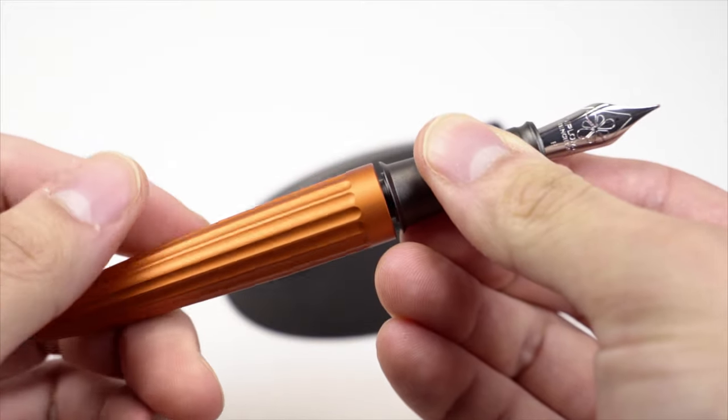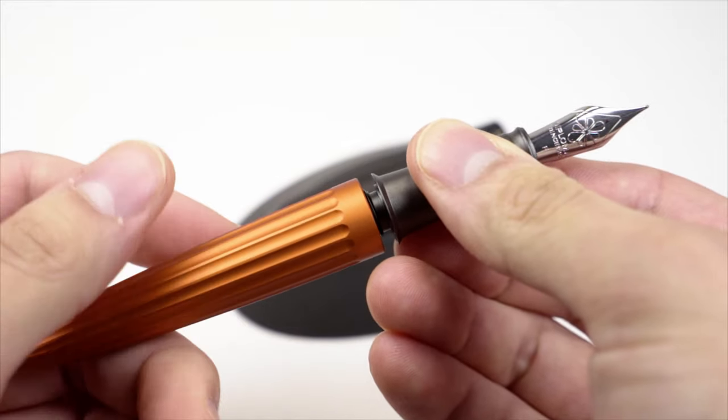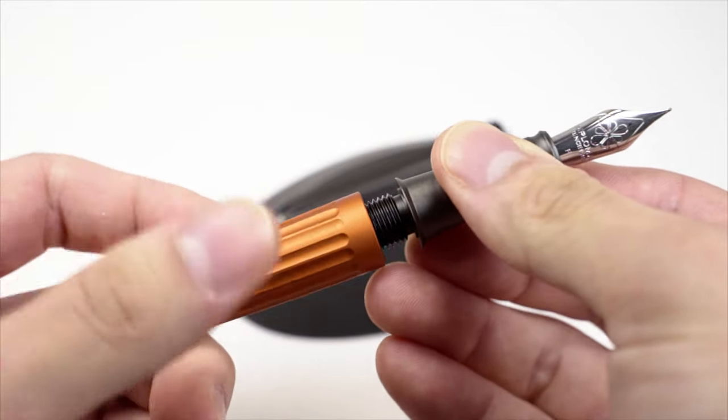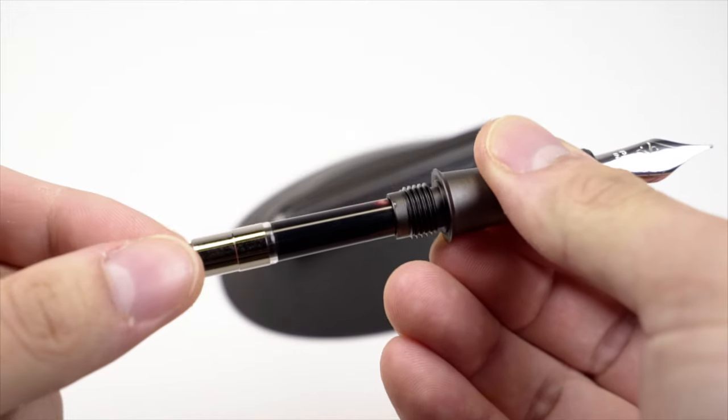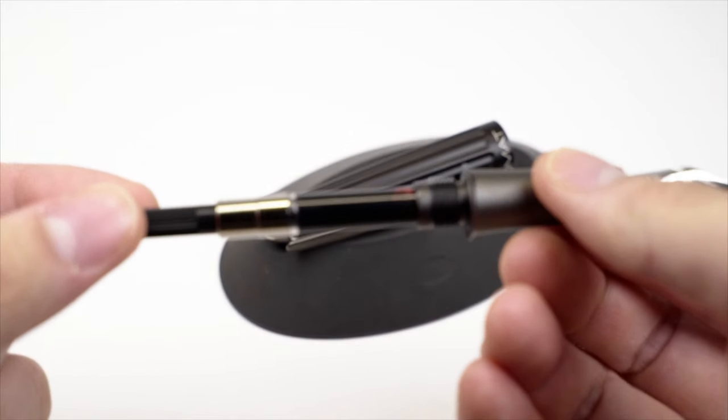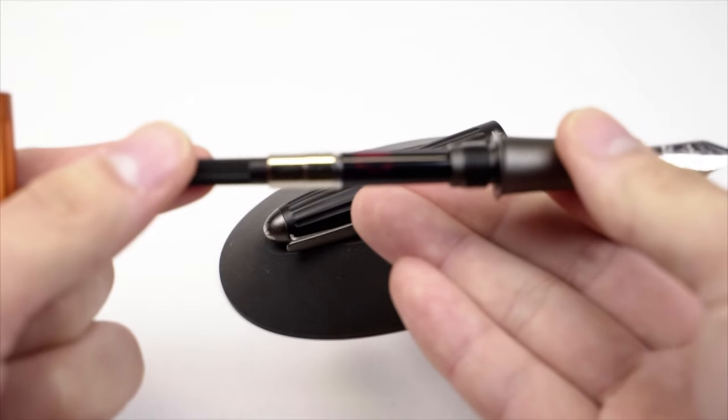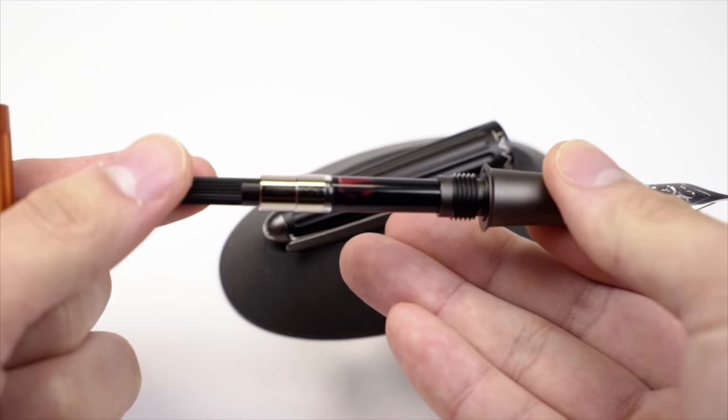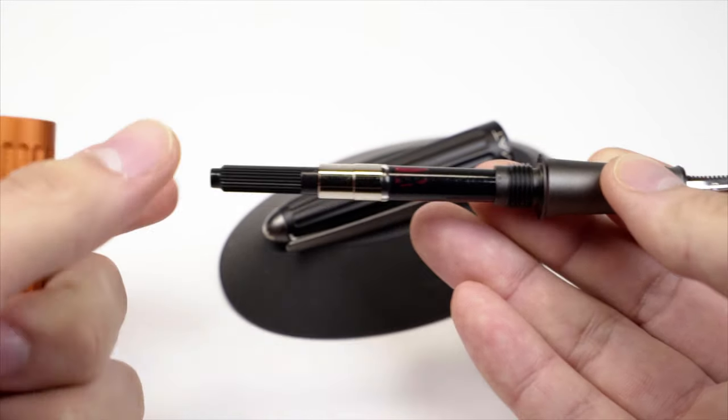Unscrewing the section, the pen uses metal threads both on the section and the body. Thankfully, the threads are smooth and doesn't give you that horrible fingernails on chalkboard feeling. The included converter is quite nice and will probably last a long time and shouldn't need to be replaced.